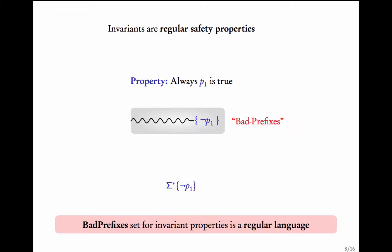Note that invariants are regular safety properties. For example, look at the property 'always P1 is true.' Invariants are properties of the form G(phi) where phi is a propositional formula over P1 and P2. A bad prefix is one which sees a letter that does not contain P1. So this is of the form sigma-star followed by not-P1 — where not-P1 could be either the empty set or the singleton {P2}. This bad prefixes set can be described using an automaton, and you know how to construct it.